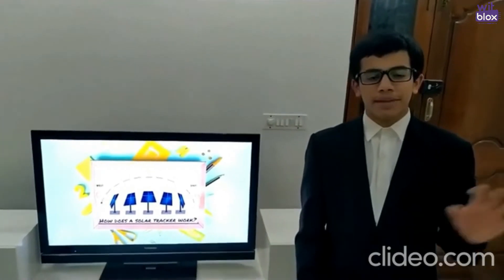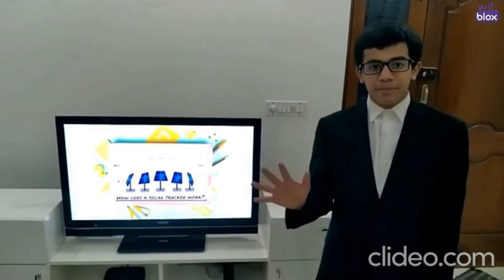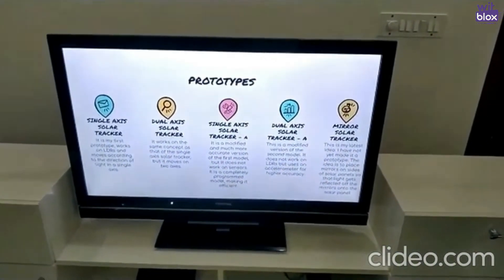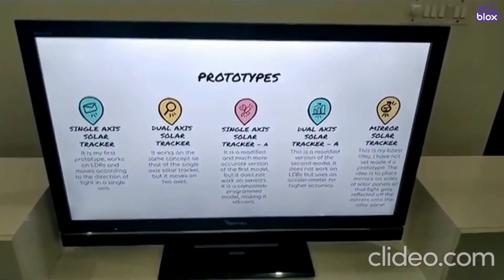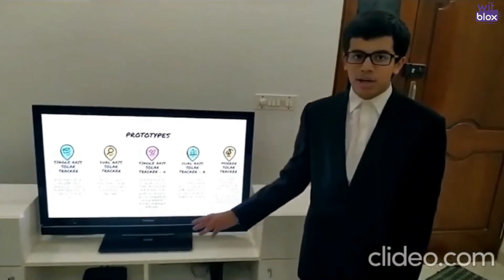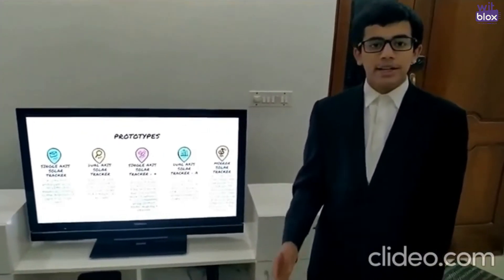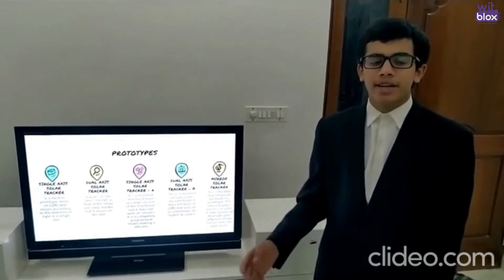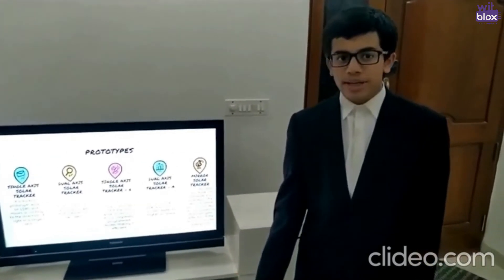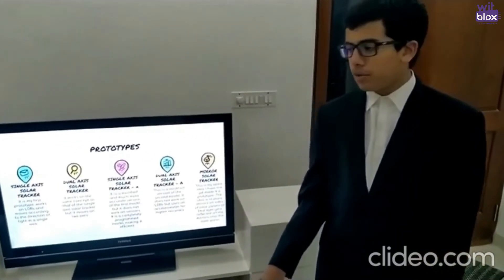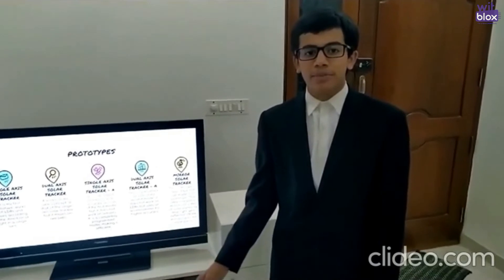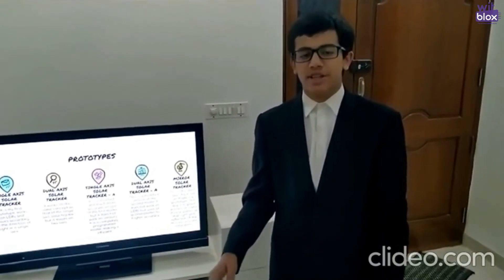In order to move the solar panel from east to west, I have envisaged 5 prototypes. The single-axis solar tracker works on LDRs and uses a single axis for moving. The dual-axis solar tracker works on LDRs but uses two axes for better accuracy. The enhanced single-axis solar tracker works on programming. It moves 4 degrees every minute and helps in better tracking of sunlight. The enhanced dual-axis solar tracker works on an accelerometer and helps in better accuracy of the whole product. And finally, the mirror solar tracker. It is still in its ideation stage. It is a cost-effective prototype. It works on the principle of reflection using mirrors.